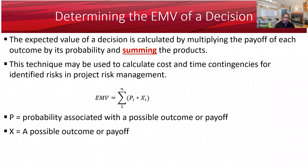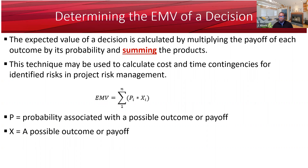The formula is the sum of P times X, where P is the probability associated with a possible outcome or payoff, and X is the possible outcome or payoff.